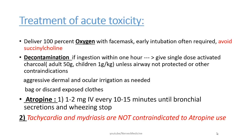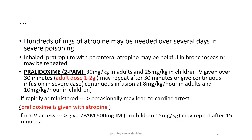Aggressive dermal and ocular irrigation is needed. Bag or discard exposed clothing. Atropine is the mainstay of treatment: 1 to 2 mg IV every 10 to 15 minutes until bronchial secretions and wheezing stop. Tachycardia and mydriasis are not contraindications to atropine use. Hundreds of milligrams of atropine may be needed over several days in severe poisoning.